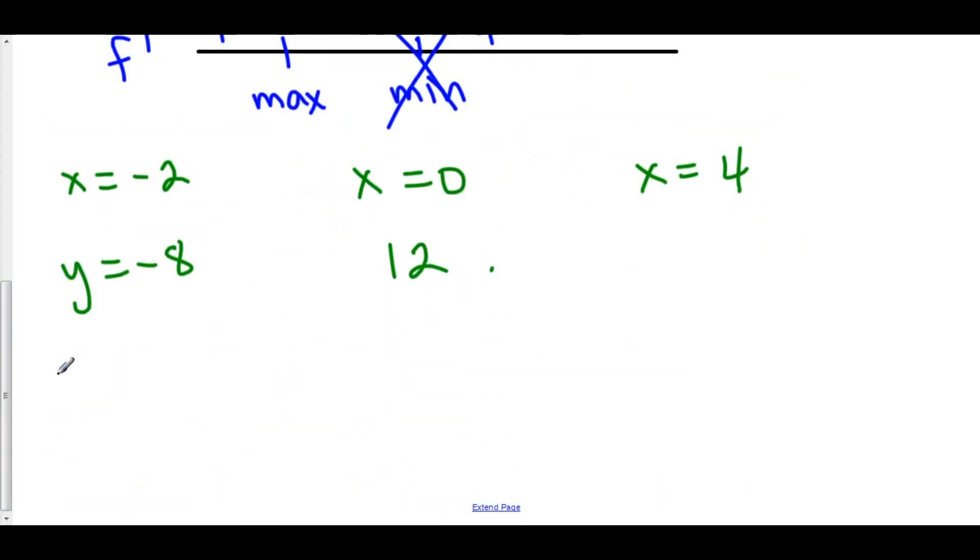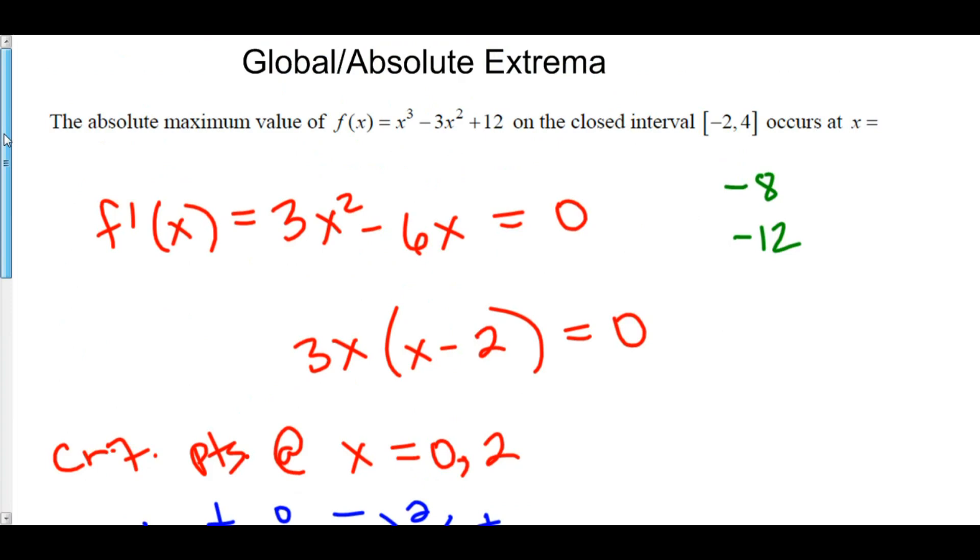And now let's check 4. When you plug in x = 4, 4³ = 64, 4² = 16 times 3 = 48, so we have -48, and then plus 12. Now, 64 - 48 = 16 plus 12 = 28.